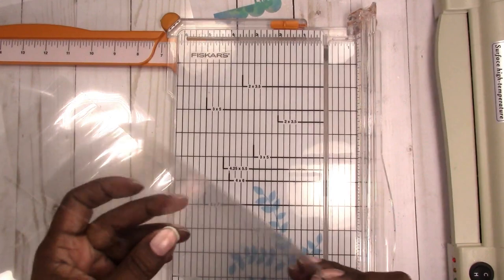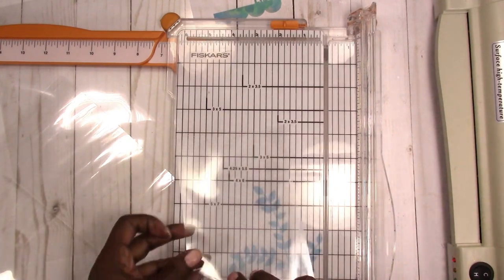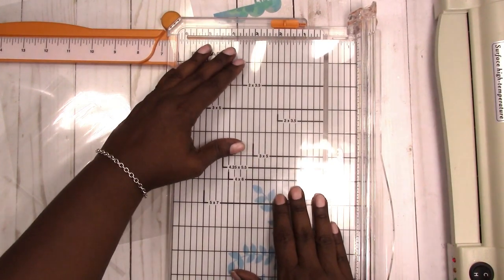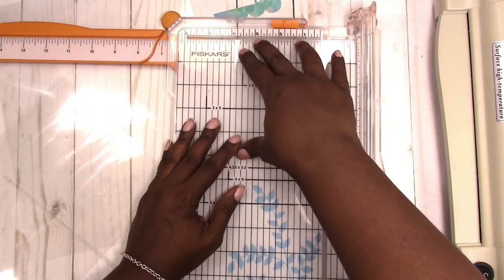So now I'm going to trim this down. Even though personal size is three and three quarters, I'm going to do a little bit bigger and go three and seven-eighths.